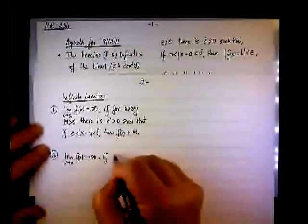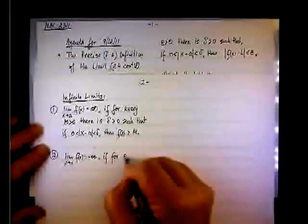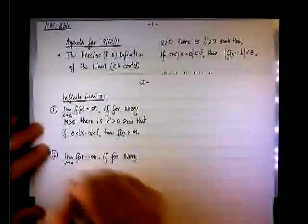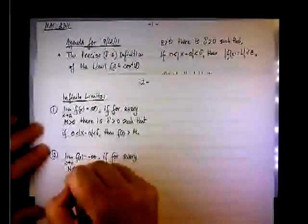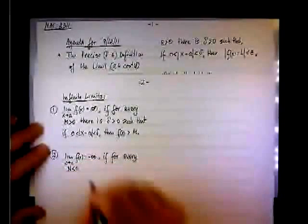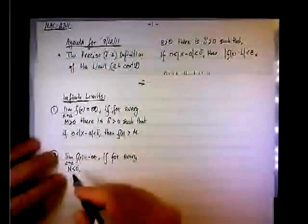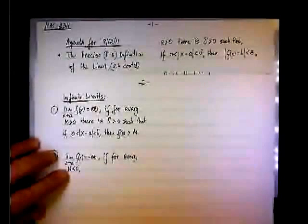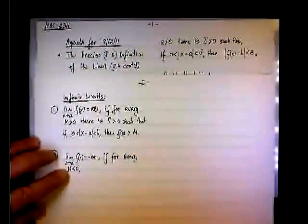We say that if for every n, here instead of m positive, we're going to pick up n negative. So for every negative value n, again n can be extremely negative, negative million, negative billion.